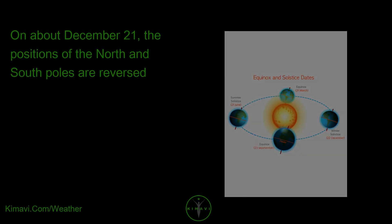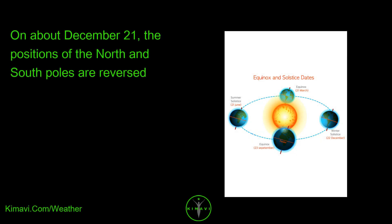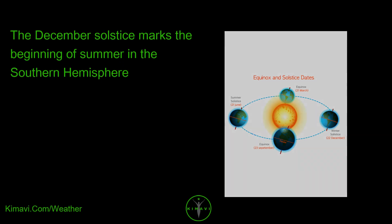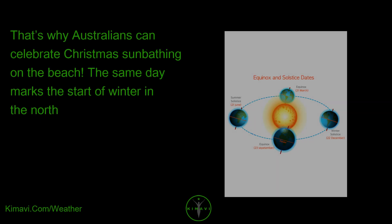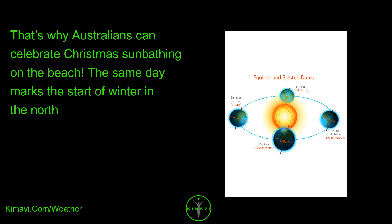On about December 21st, the positions of the North and South Poles are reversed. The December solstice marks the beginning of summer in the Southern Hemisphere. That's why Australians can celebrate Christmas sunbathing on the beach. The same day marks the start of winter in the North.